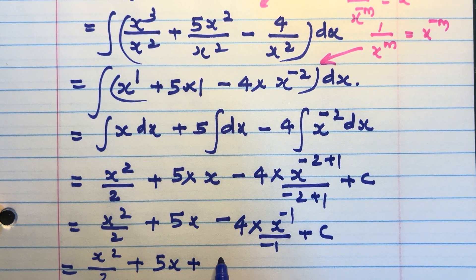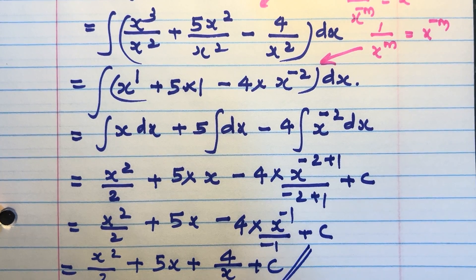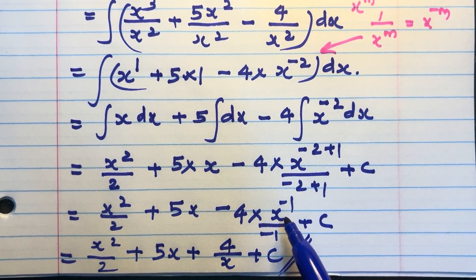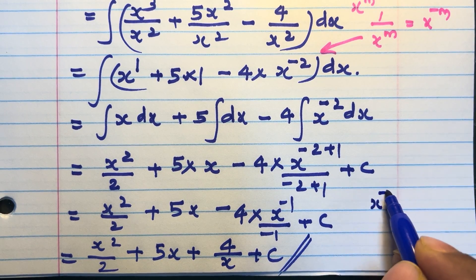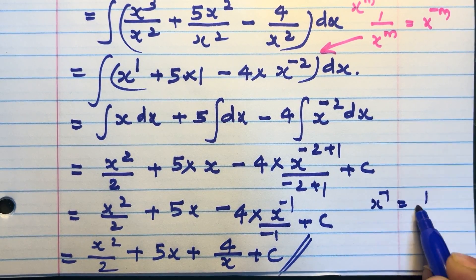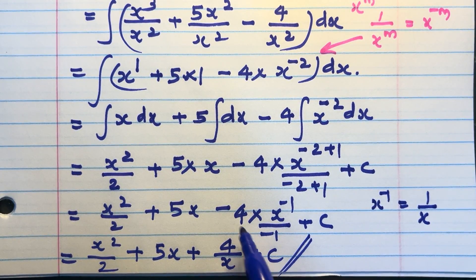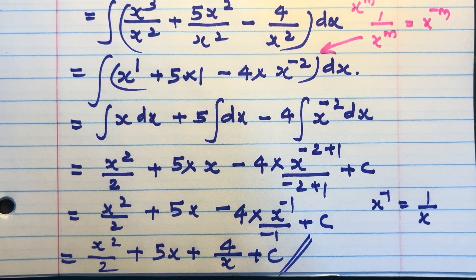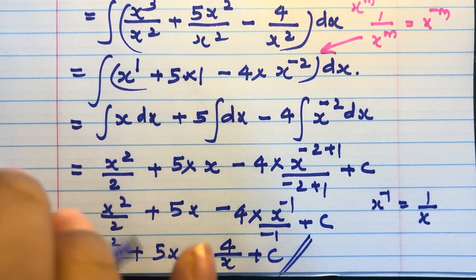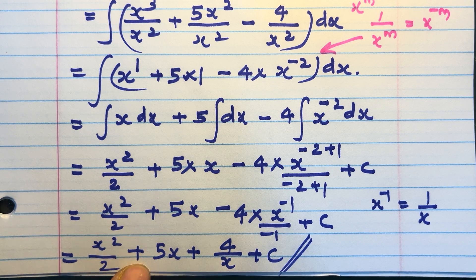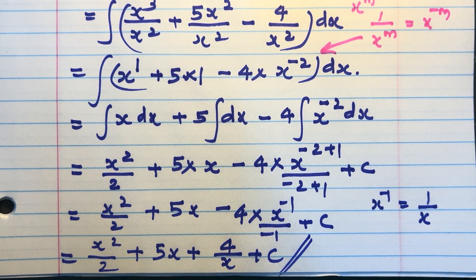The negatives: minus times x^(−1)/(−1) gives a positive value. x^(−1) = 1/x, and the two negatives make a positive, so we get +4/x. The final answer is x²/2 + 5x + 4/x + c.